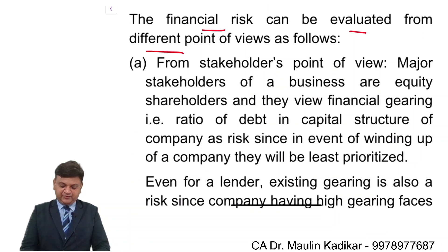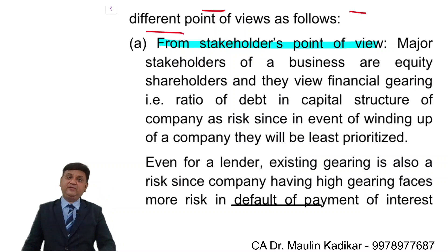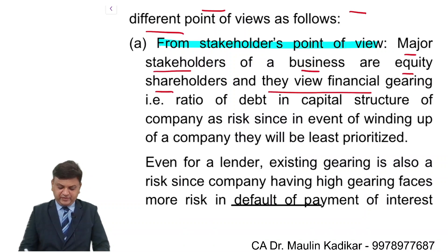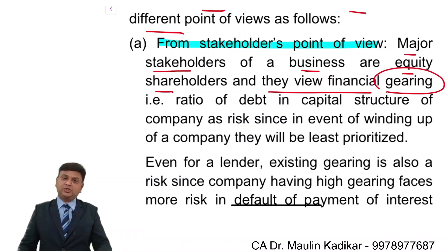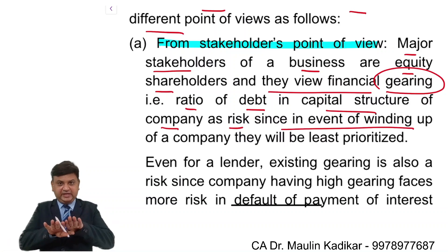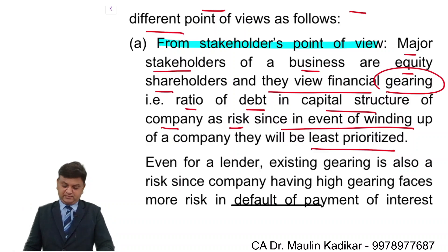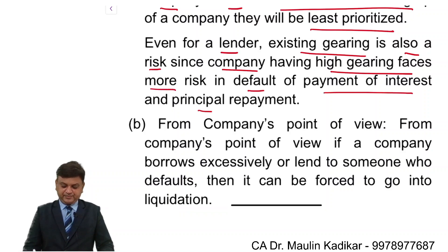From the stakeholders' point of view: an increase in debt financing creates more risk for investors — whether they have invested in equity shares or ventures. Major stakeholders are equity shareholders, and they view financial gearing as risk. Gearing stands for the introduction of committed sources of finance — that is, debt — in the capital structure. In the event of winding up, equity shareholders are last in the queue. Even for a lender, existing gearing is a risk since a highly geared company faces more risk in paying interest and principal repayment.